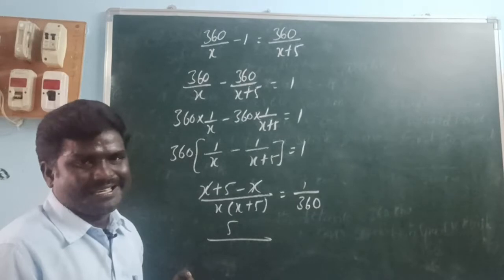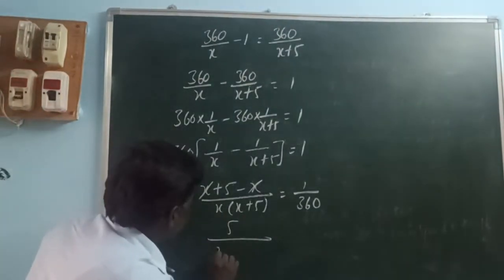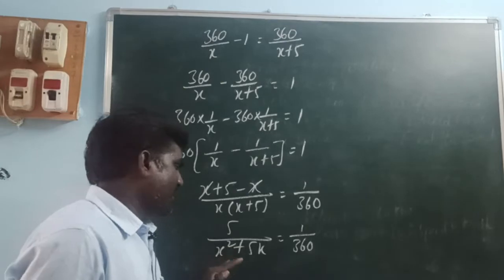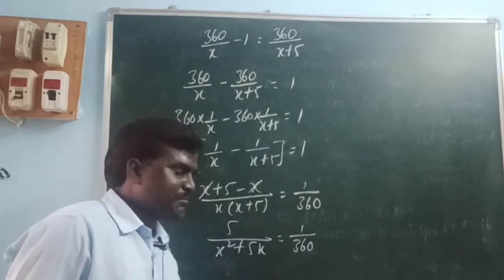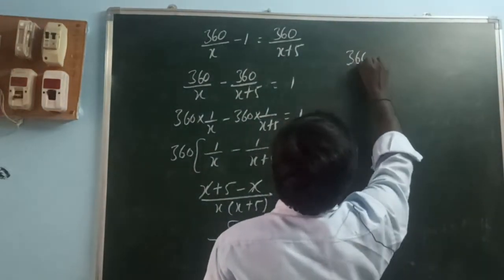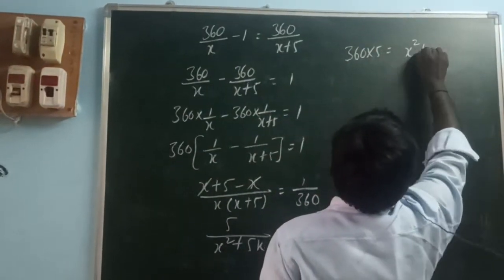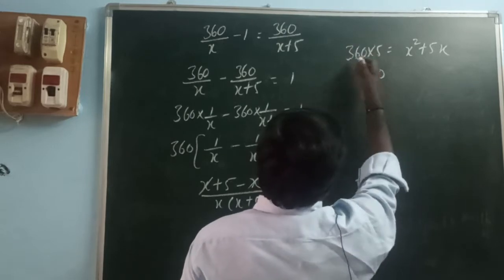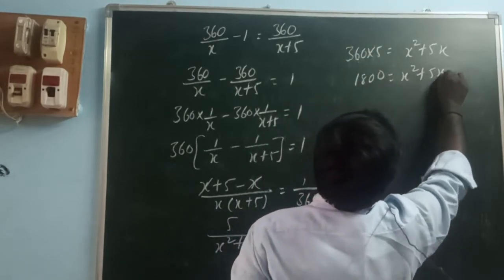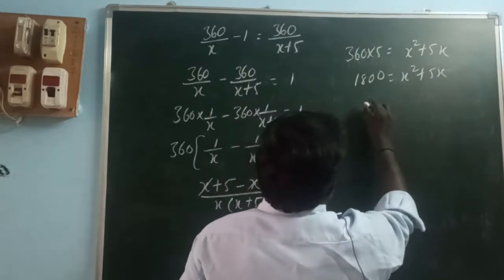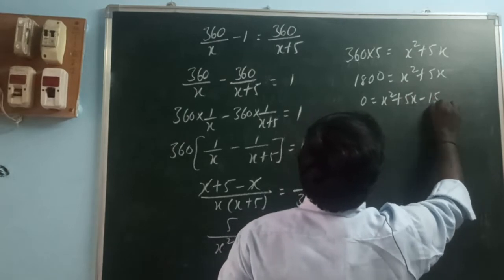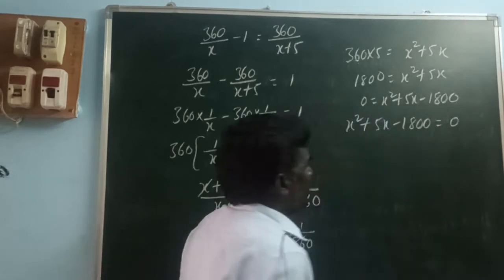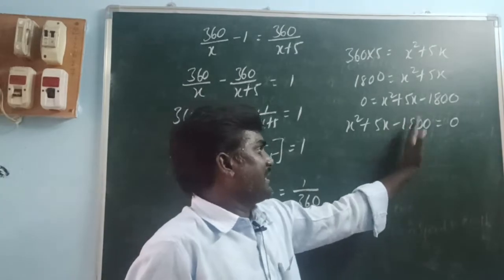Using the distributive property, a(b+c) = ab + ac, so x(x+5) = x² + 5x. Therefore x² + 5x equals 1/360 times 360, which gives us x² + 5x − 1800 = 0. We can write in standard form: x² + 5x − 1800 = 0.